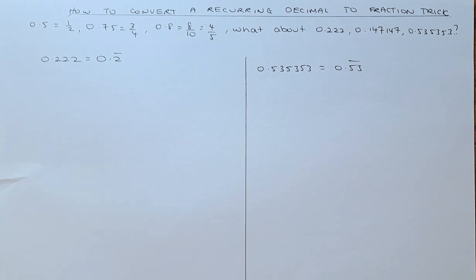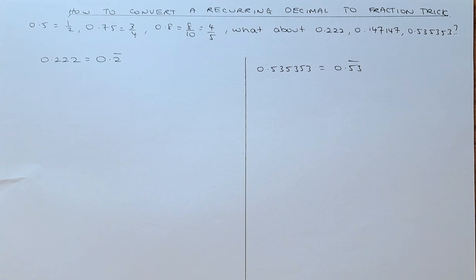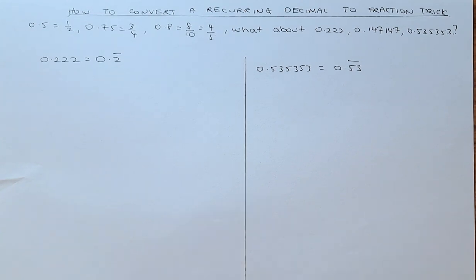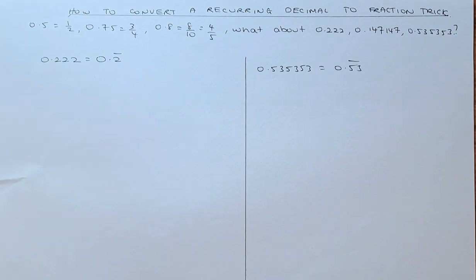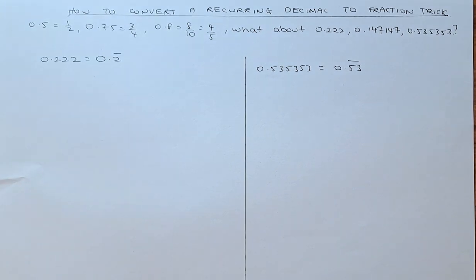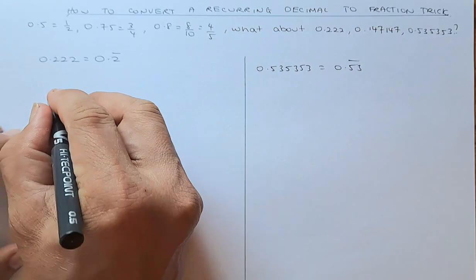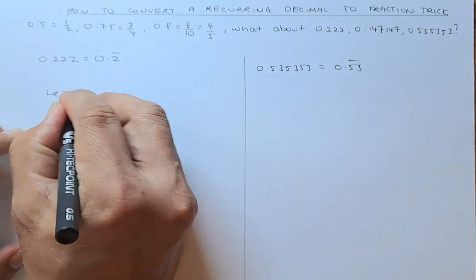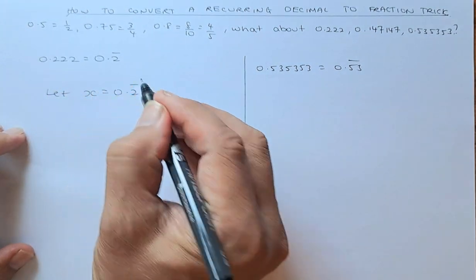I'll show you the trick now. So suppose 0.222, that can be written as 0.2 recurring. To solve this, it's very simple. We let the number, let x equals to 0.2 recurring.